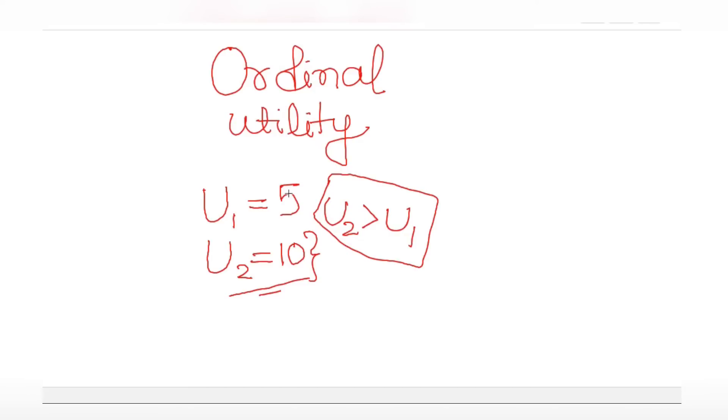There are certain theories which require cardinal utility functions. Cardinal utility functions are designed in such a way that the difference is also meaningful, which means that a 5 unit difference between utility has some kind of meaning. But in ordinal utility function this difference does not have a lot of meaning.